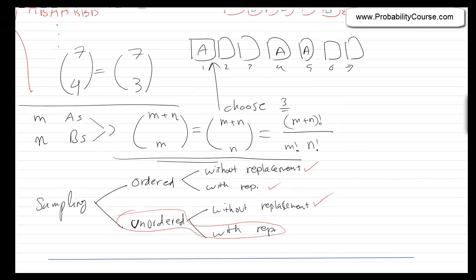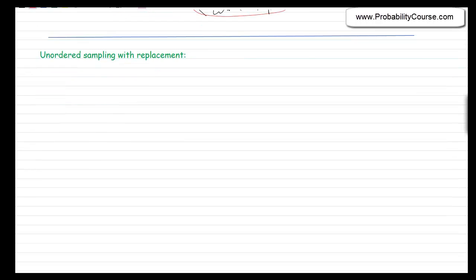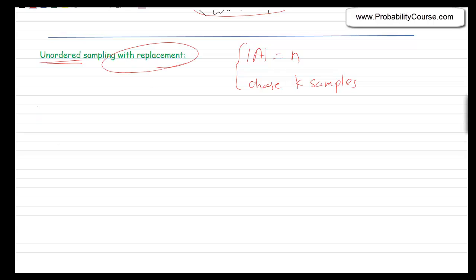So we want to talk about unordered sampling with replacement. What it means is that I have a set A with N elements and I want to choose K samples, in a way that ordering does not matter — I don't care which element I choose first or second — and the sampling is with replacement. Let's look at a simple case: let A be {1, 2, 3} and let K equal 2, so N equals 3. I have three elements and I want to choose two of them, with repetition allowed.